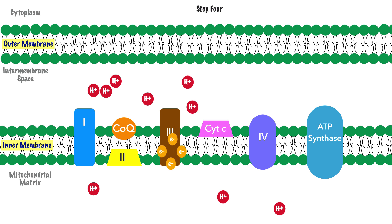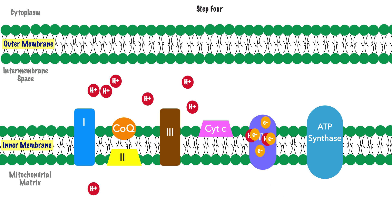For step 4, the electrons at Complex 3 transition to cytochrome C and are ultimately passed along to Complex 4, which becomes highly charged, allowing more protons to be pumped from the mitochondrial matrix to the intermembrane space, further building the proton gradient.